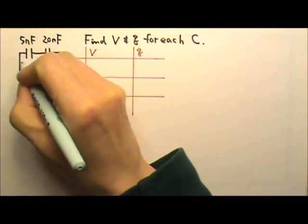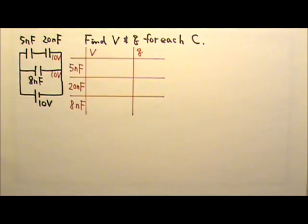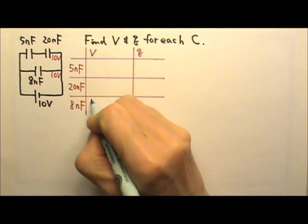So this segment has 10 volts. This segment gets 10 volts as well. So right away we know that 8 nanofarad gets 10 volts.